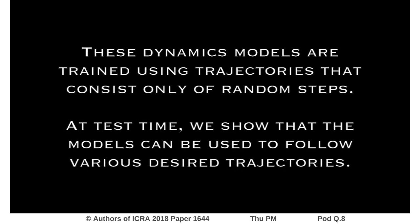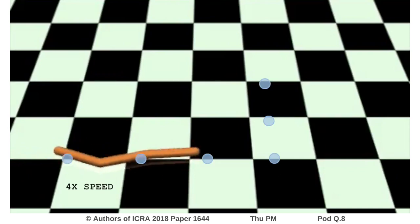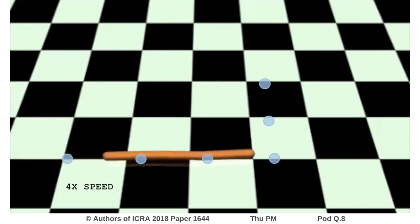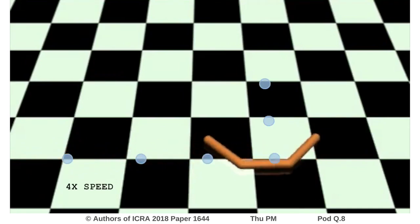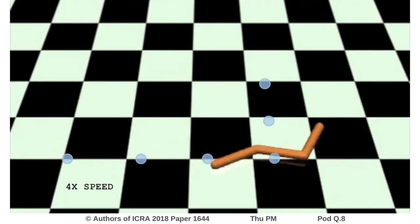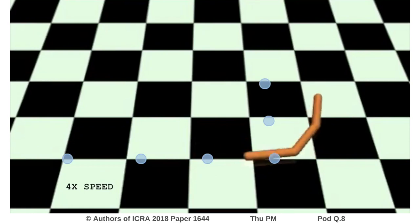Note that these dynamics models are trained using trajectories that consist only of random steps. At test time, we show that the models can be used to follow various desired trajectories. Here, the swimmer performs a left turn, receiving only sparse desired center of mass positions as guidance.